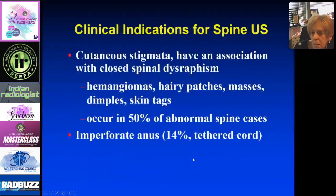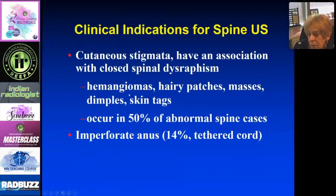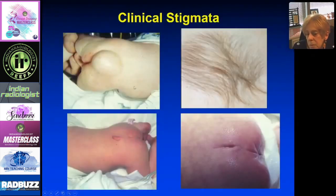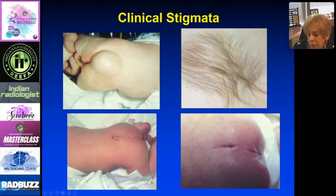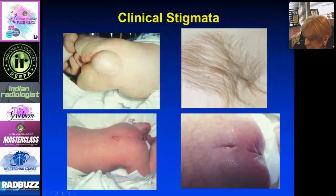The indications include cutaneous findings associated with closed spinal dysraphism: hemangiomas, hairy patches, masses, dimples, and skin tags. If you see these, you'll find a lesion in about 50% of cases on ultrasound. Imperforate anus also has an association with an abnormal spine — 14% have a tethered cord. A mass over the lower back, a hairy tuft, a skin tag, and a dimple are some clinical stigmata. A dimple close to the anus is generally lower risk. If located higher on the back, the risk of an underlying abnormality increases.